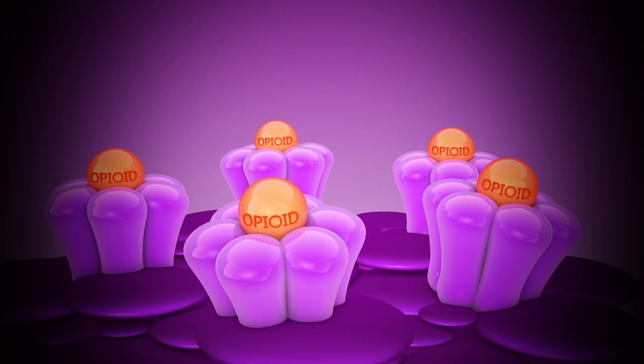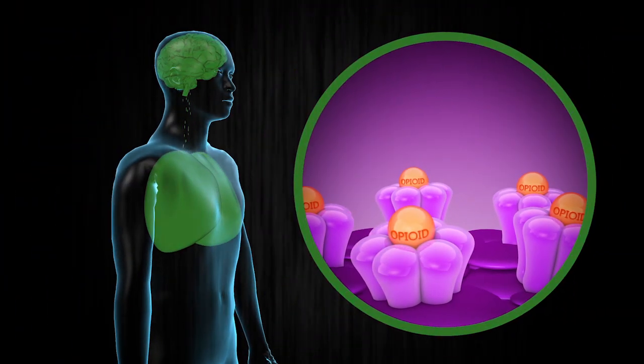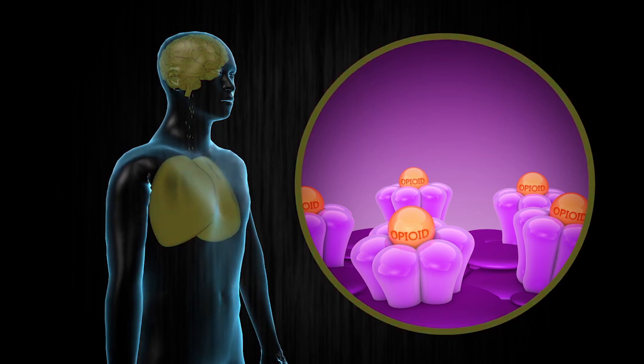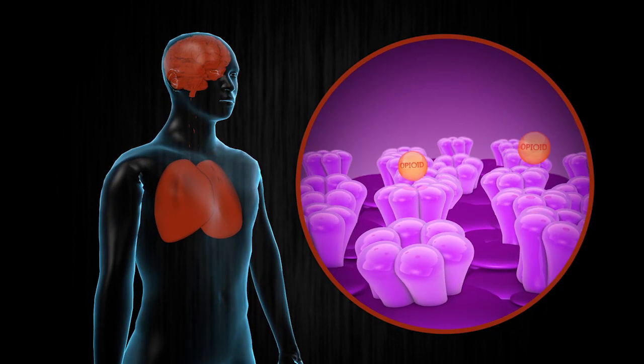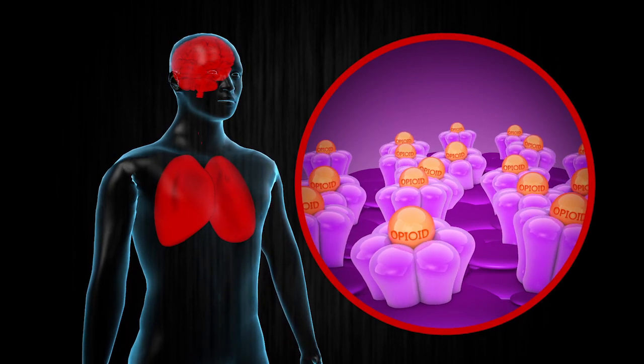What makes opioids potentially so dangerous is that these same receptors ensure we keep breathing. An overdose happens when more and more opioid molecules latch onto these receptors, overwhelming the brain's ability to keep us breathing properly or even at all.